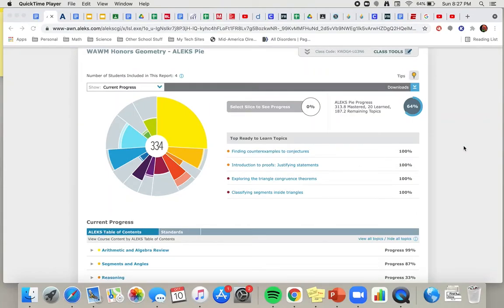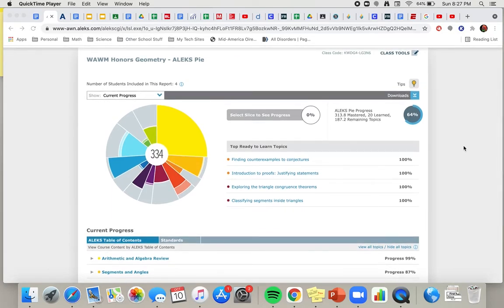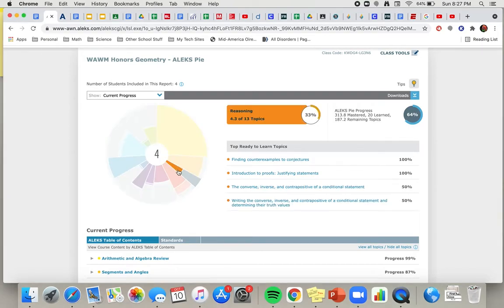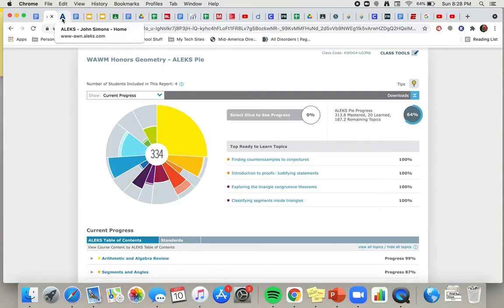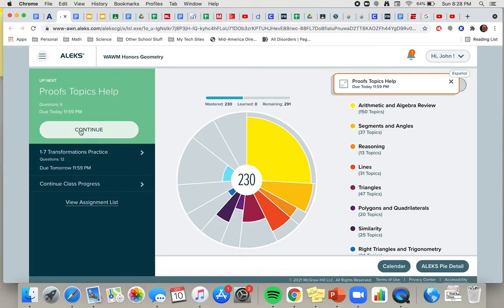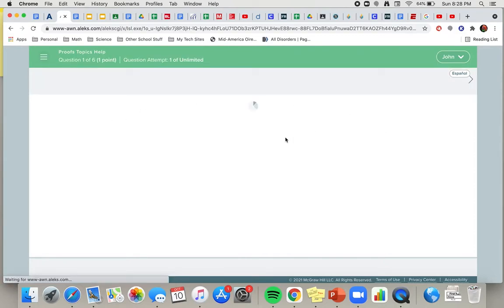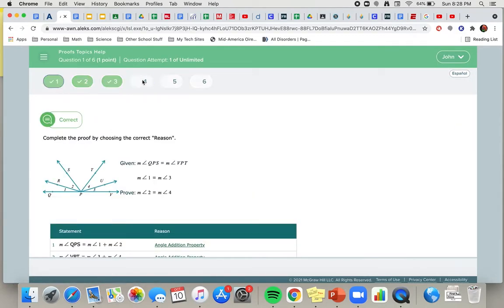Okay, here we are again. Let's look at another topic that's coming up as one of our top topics, and this is also found in the reasoning pie slice, right here. That is called finding counterexamples to conjectures.